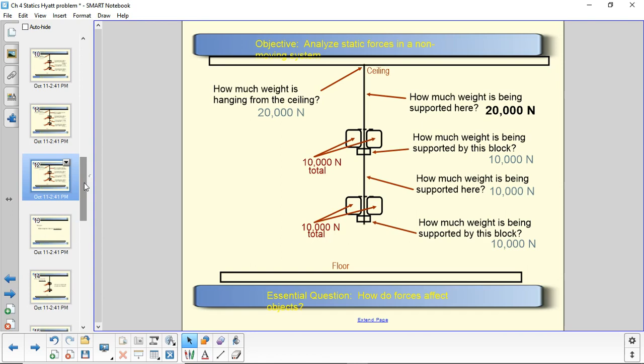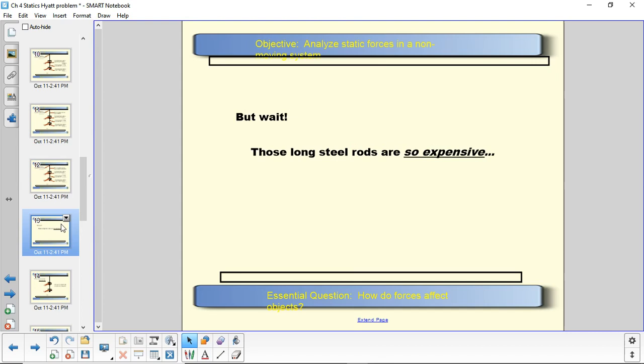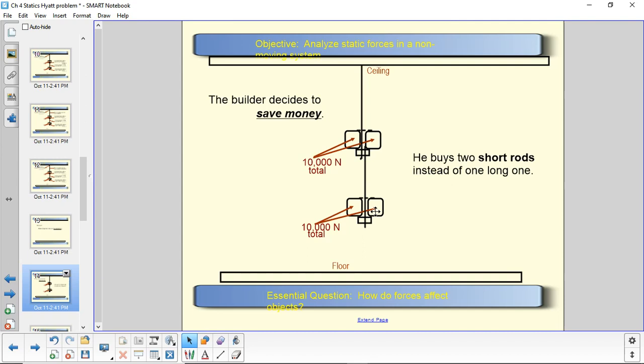Now, suppose we're building this thing. And remember, this is like the second floor, and this is like the fourth floor, and this is the ceiling. So we're talking about a 50, maybe a 60-foot-long steel rod here. And those things are kind of expensive, and they're difficult to drive through city streets. This hotel is in the middle of a city, and driving a 60-foot steel rod and getting it around corners to the construction site is a little bit challenging. So the builder has this great idea that to save money and to make it easier to transport the materials, they will buy two short rods instead of one long one, and they will assemble it in this way. So a short rod from the ceiling to the first bridge, and then another short rod from the first bridge to the second bridge. And the question that we have is, is this going to make any difference?